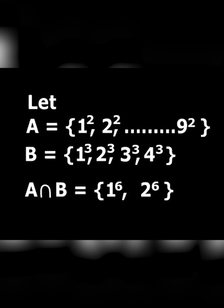Let A equal the set {1², 2², ..., 9²}, because A contains all perfect squares less than 100. Let B equal the set {1³, 2³, 3³, 4³}, because B contains all perfect cubes less than 100.